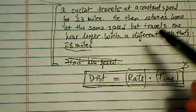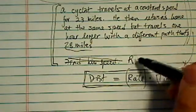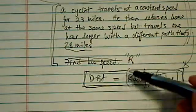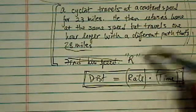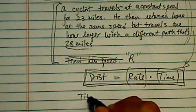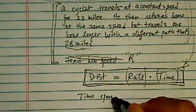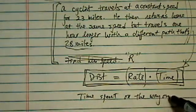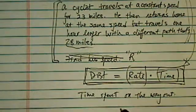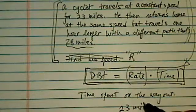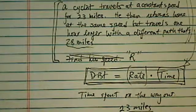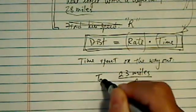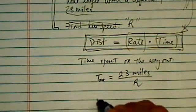Now, assuming we know what the speed is, let's call it R for lack of more creative variables at this late hour. The time spent on the way out, of course, is distance, which is 23 miles, divided by constant rate. That's it. So, time out is equal to this. Similarly, time coming back in is 28 divided by R.